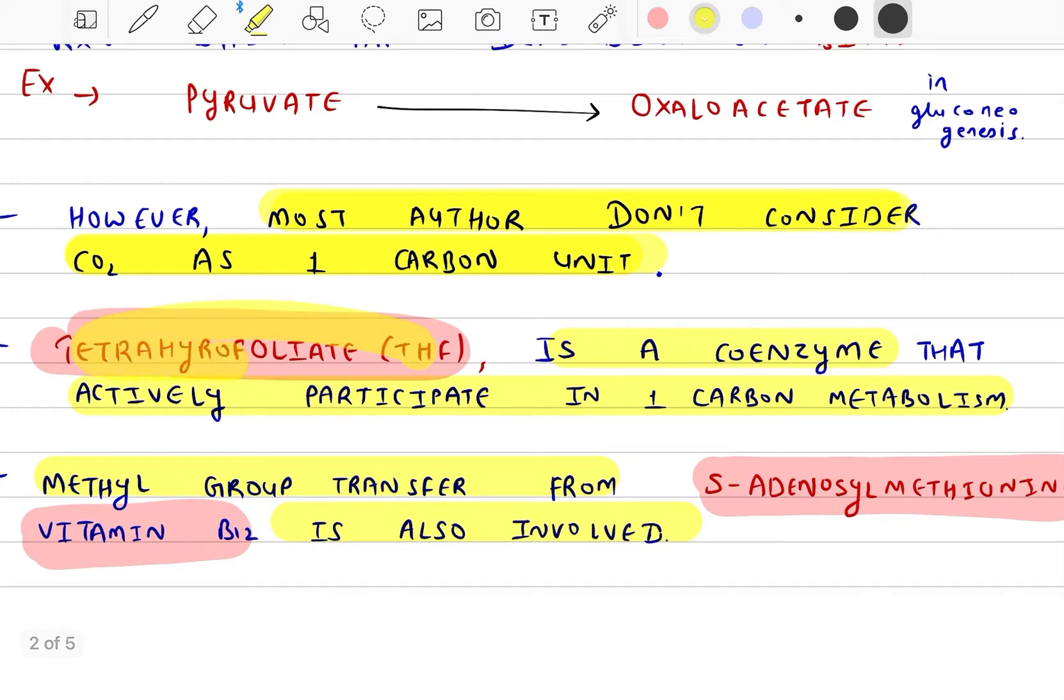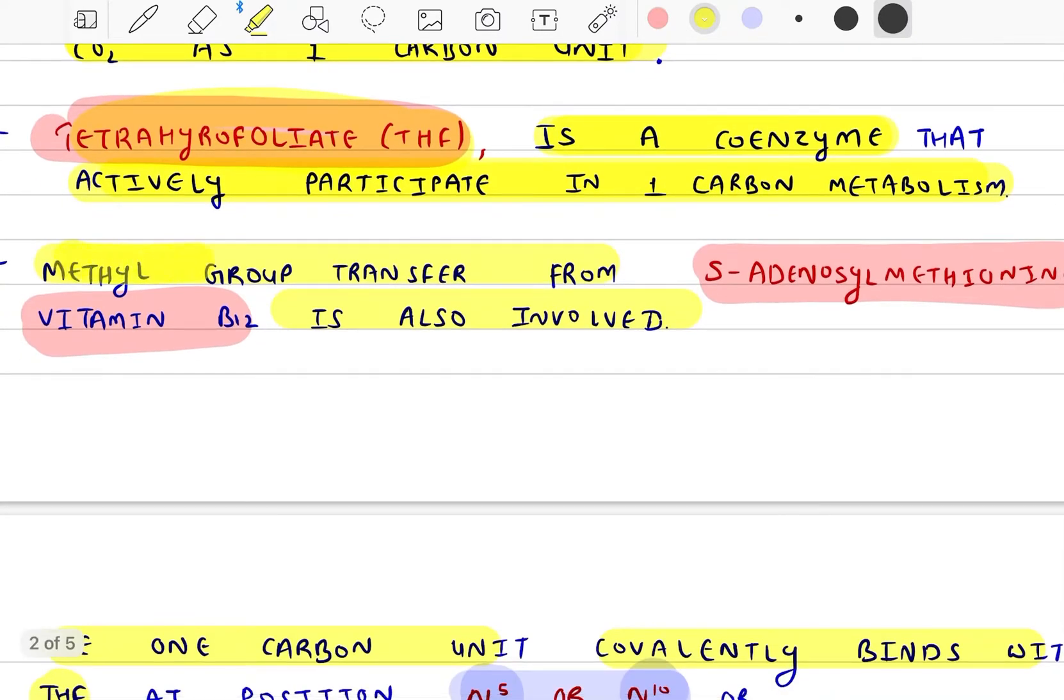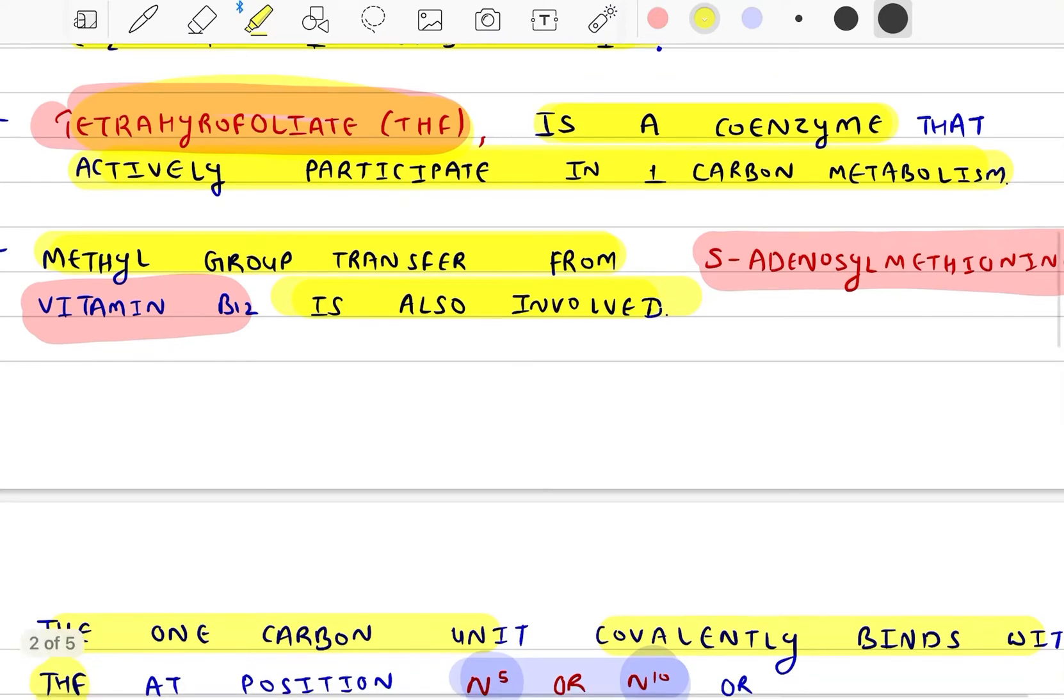Tetrahydrofolate (THF) is a coenzyme that actively participates in one carbon metabolism. Methyl group transfer from S-Adenosyl Methionine and vitamin B12 is also involved in one carbon metabolism.